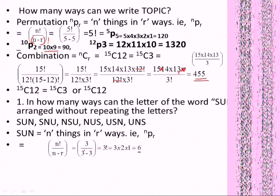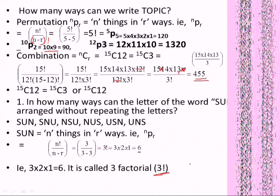Now, 3 divided by 3 minus 3, that means factorial 3, that is 3 into 2 into 1, that is 6. It is called 3 factorial. What do we call it? 3 factorial. If we call it 3 factorial, we call it 3 factorial. This is 3 factorial.